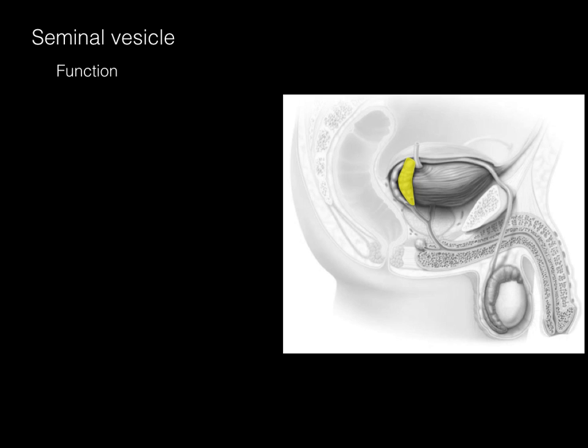The seminal vesicles are paired glands located at the back of the bladder. They produce a viscous secretion containing fructose to give energy to the sperm, prostaglandins, fibrinogen, and other enzymes and proteins. These glands contribute the majority of ejaculate — a good 60 to 70 percent — providing nutrients for the sperm, helping decrease the acidity of the vagina since sperm need a more alkaline environment, and also helping prevent sperm from coagulating.